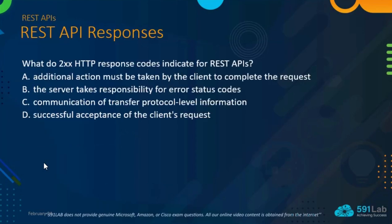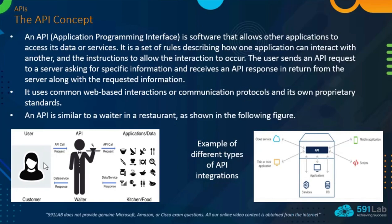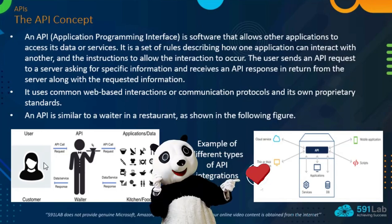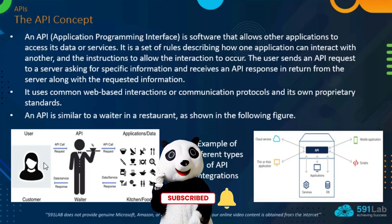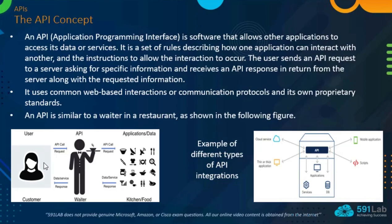What do these two series of HTTP response codes indicate for REST APIs? An API — application programming interface — is software that allows other applications to access its status or services. It is a set of rules describing how one application can interact with another and the instructions to allow the interaction to occur. The user sends an API request to a server asking for specific information and receives an API response from the server along with the requested information. It uses common web-based communication protocols and its own proprietary standard.